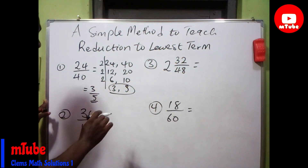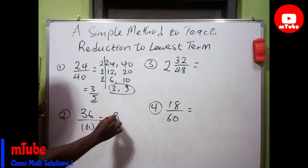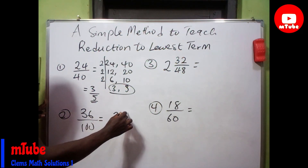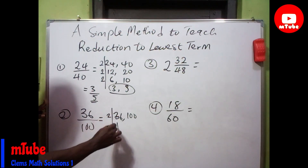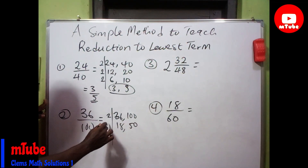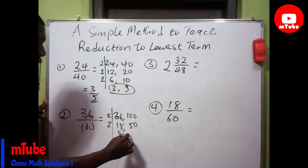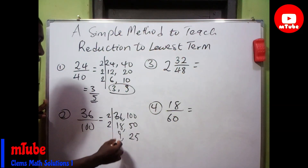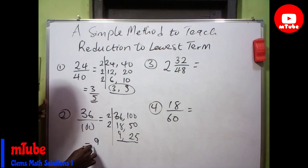This is very simple. Coming to the next example, you write out 36 and 100. 2 divides 36 to give 18, and 2 divides 100 to give 50. 2 divides 18 to give 9, and 2 divides 50 to give 25. So 36 over 100 reduced to the lowest term is 9 over 25.